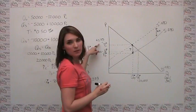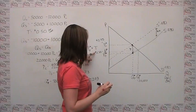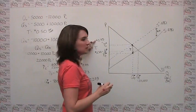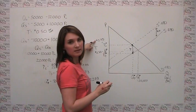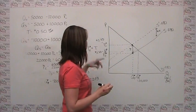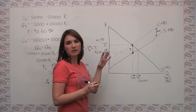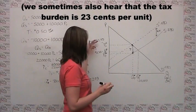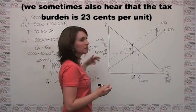I will notice that the price to the consumer has gone up from $2.50 to $2.73. So we can say that the tax incidence for the consumer is the difference between these two prices, or by my calculations, $0.23.